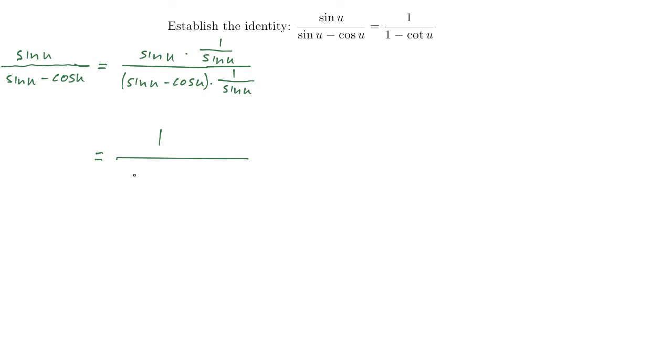Well, I have to distribute the 1 over sine u. So I have sine u times 1 over sine u. That's 1. I have to distribute the 1 over sine u to the negative cosine u as well. So we get cosine u over sine u, which we all know is cotangent of u. And that's it. We're done. That's what we're looking for.